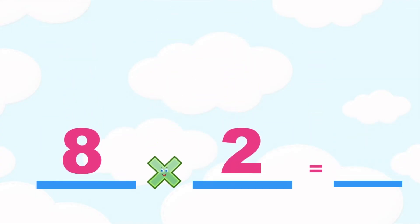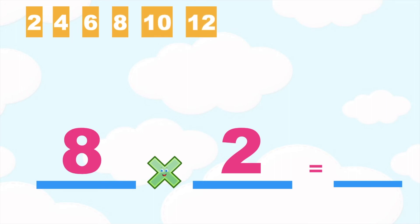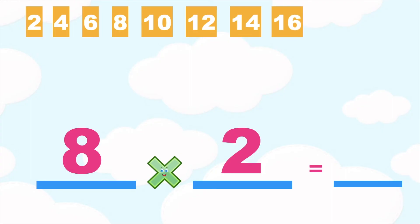How about if we have this? Eight times two is equal to blank. Again, to find the product, let's find the eighth multiple of two: two, four, six, eight, ten, twelve, fourteen, sixteen. So, eight times two is equal to sixteen.